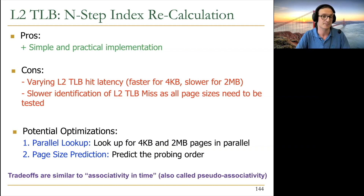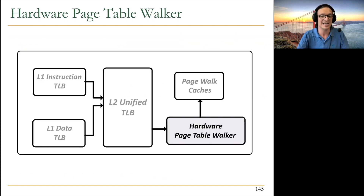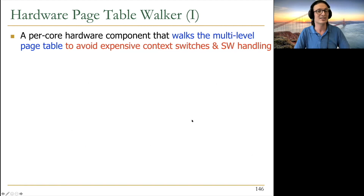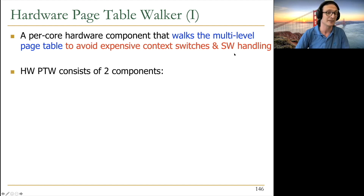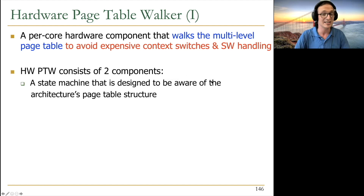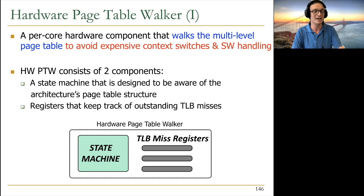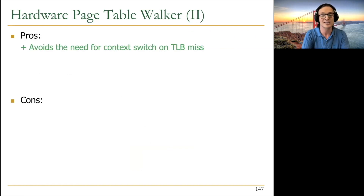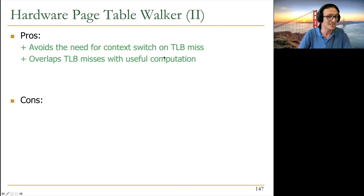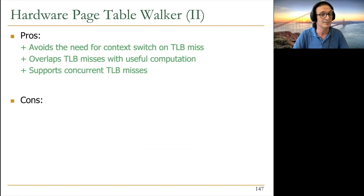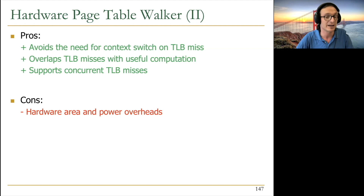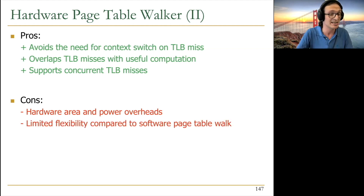The hardware page walker handles TLB misses in hardware to avoid expensive context switches and software handling. It has two components: a state machine aware of the architectural page table structure, and registers tracking outstanding TLB misses. This avoids context switching on TLB misses, supports concurrent TLB misses since hardware can handle many at once, and allows overlapping TLB misses with useful computation. The downside: hardware area and power overhead, and the software cannot change the page table organization.